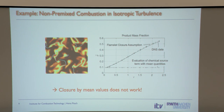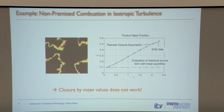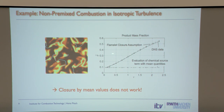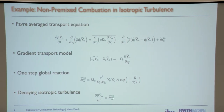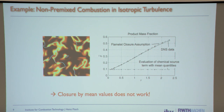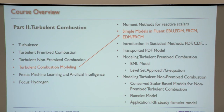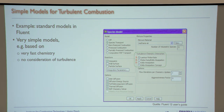A simple flamelet model gives a much better result. Using the commercial code Fluent as an example, there are several turbulence-chemistry interaction models available: laminar finite rate chemistry — which we just saw doesn't work well — as well as eddy dissipation model, eddy dissipation concept, and others.